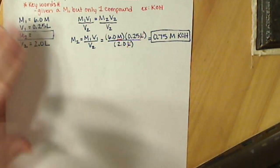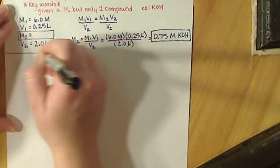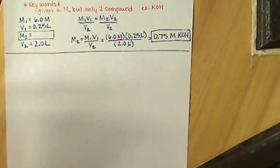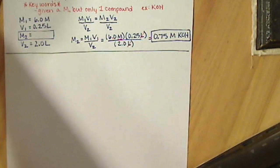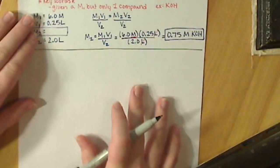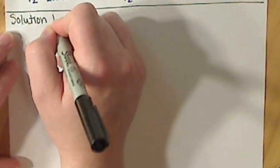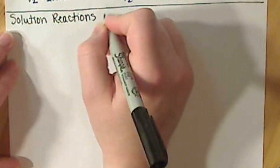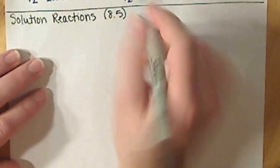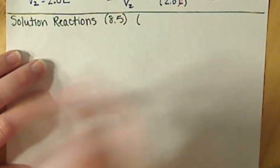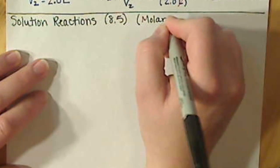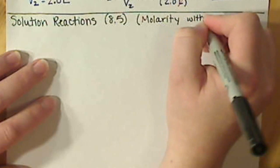Back to our notes, this is actually still a component of section 8.5. This is the second half of 8.5, the solution reactions. Basically, what we're doing is we're combining molarity with stoichiometry.